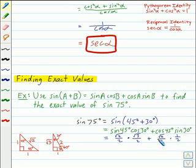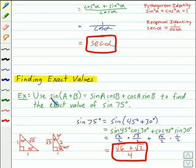When we simplify this expression, we get our answer, rad 6 plus rad 2 all over 4. This is the exact value of sine of 75 degrees.